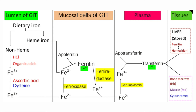Transferrin delivers iron to cells that have specific iron receptors, called transferrin receptors. These transferrin receptors are present on most body cells, but some tissues have a very large number of these receptors — for example, the liver. The number of receptors decreases when a person has sufficient iron in the body, and increases when iron in the body is decreased. Transferrin binds with receptors to form a transferrin-receptor complex, and this complex is taken into the cells by endocytosis.